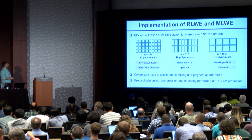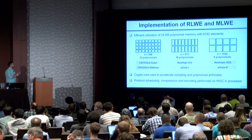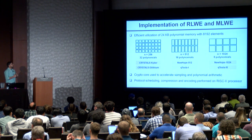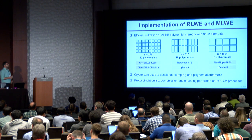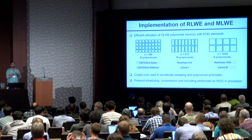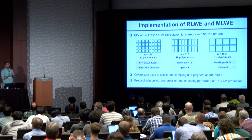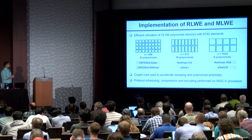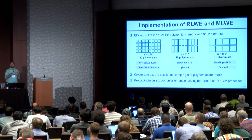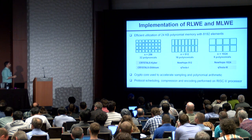Here we look at how we utilize the polynomial memory inside our chip to implement the different configurations. Our 24-kilobyte polynomial memory has 8,192 elements, which can be accessed in chunks of power-of-two sizes: 256, 512, or 1024, according to the requirements of the protocol. The memory size is just enough to support parameters for the highest security level, for example New Hope 1024.